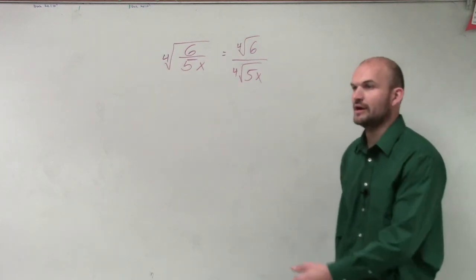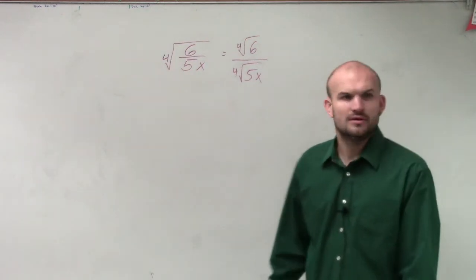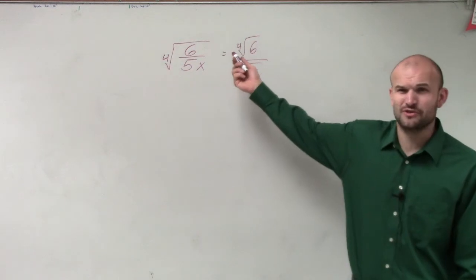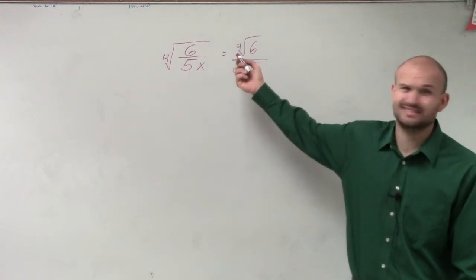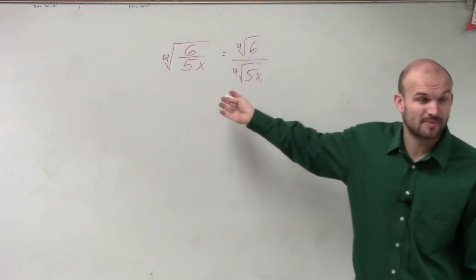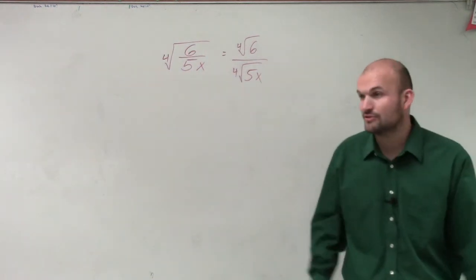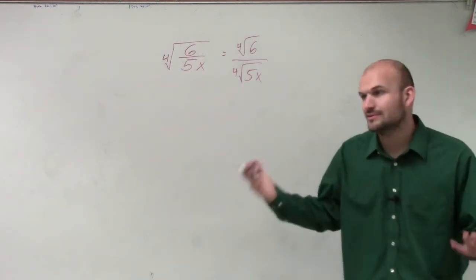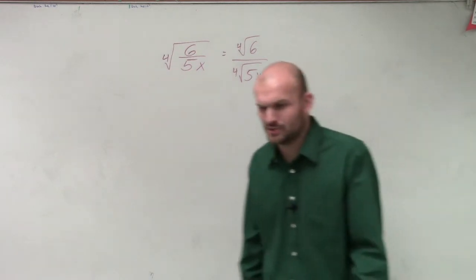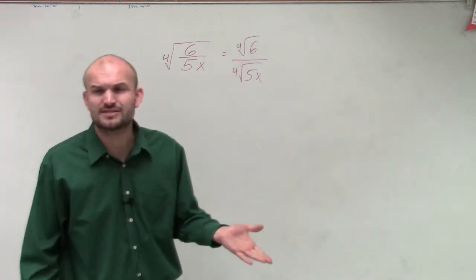Now we break this up and now we say, can we simplify this at all? Well, can I write 6 to the fourth power of anything? No. Can I write 5 to the fourth power of anything? No. Can I write x to the fourth power? No. Well, unless you're getting your fraction. So no, we're kind of stuck right now. What else can we do to simplify?